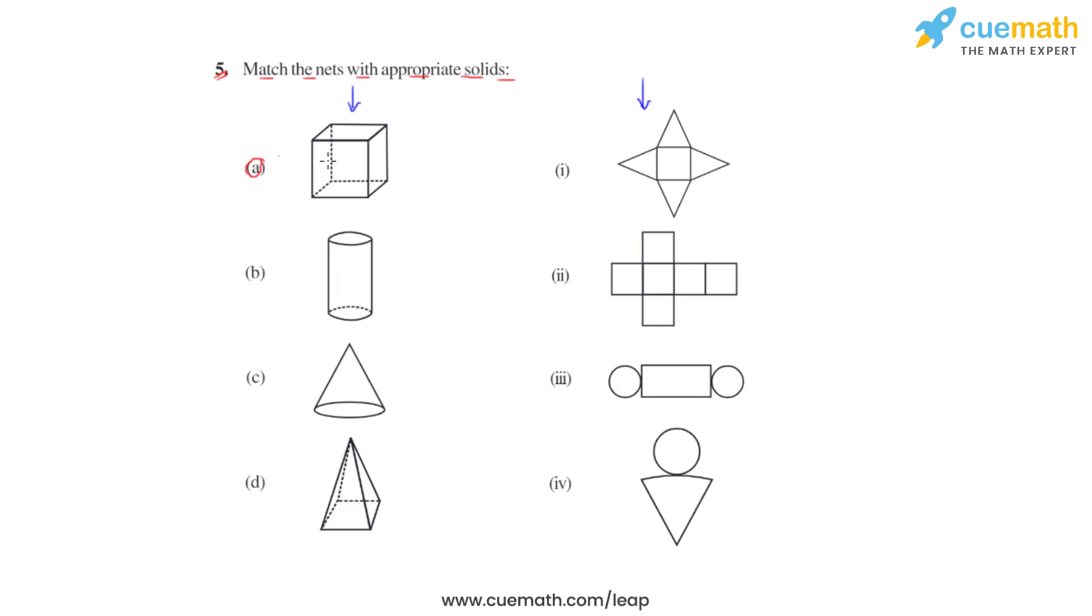If we consider the first one, which we see is a cube which consists of six square faces. Based on this observation on the right hand side, we see that the second net consists of six square faces. This net can be used to form the cube. Hence we can say for the cube, the second net would be the appropriate net.